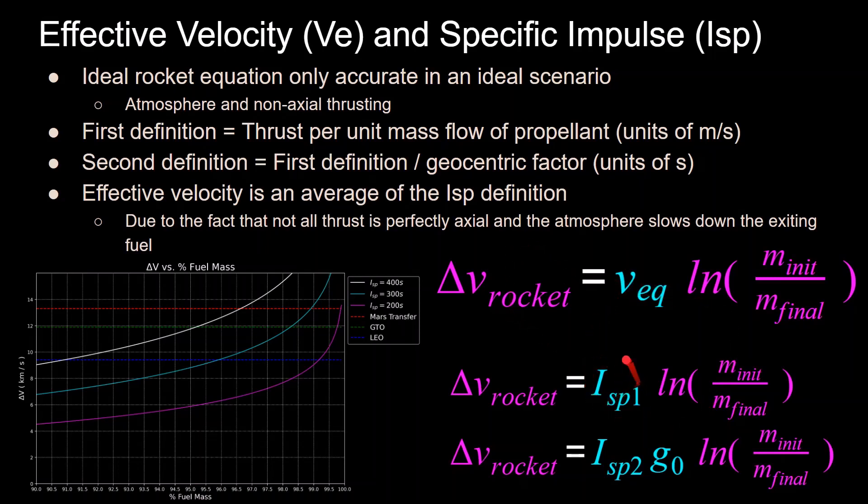Here you can see the different definitions of the specific impulses and how they're plugged into the equation below. For the first definition, you can just plug it straight in, but for the second definition, you have to multiply it by G0 in order to get it into the units that you want of velocity.